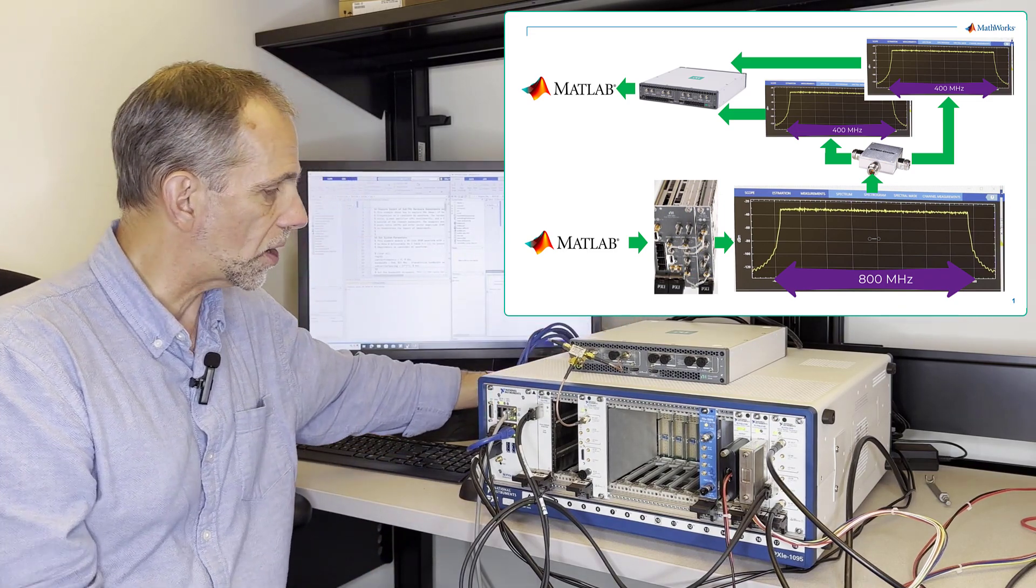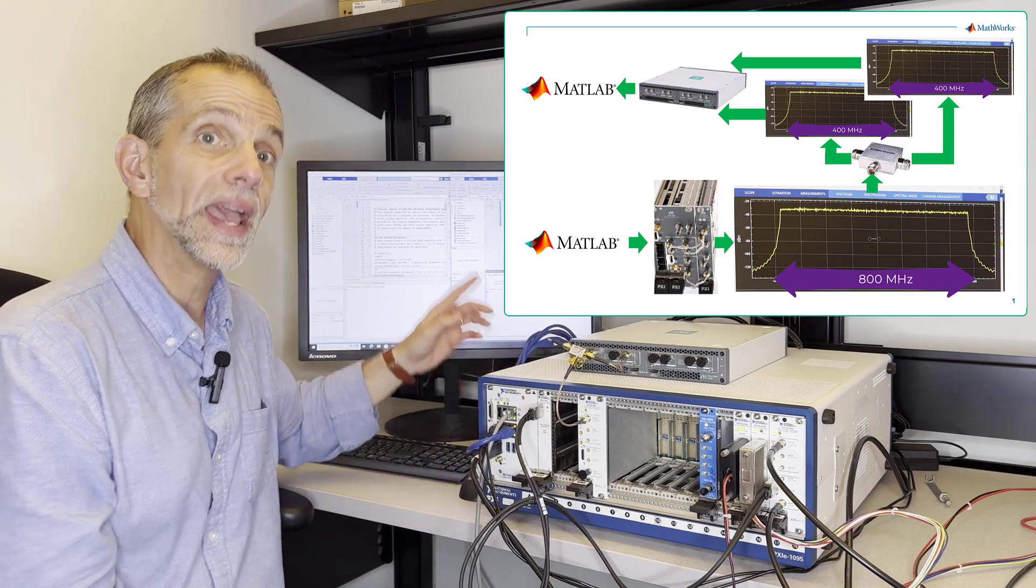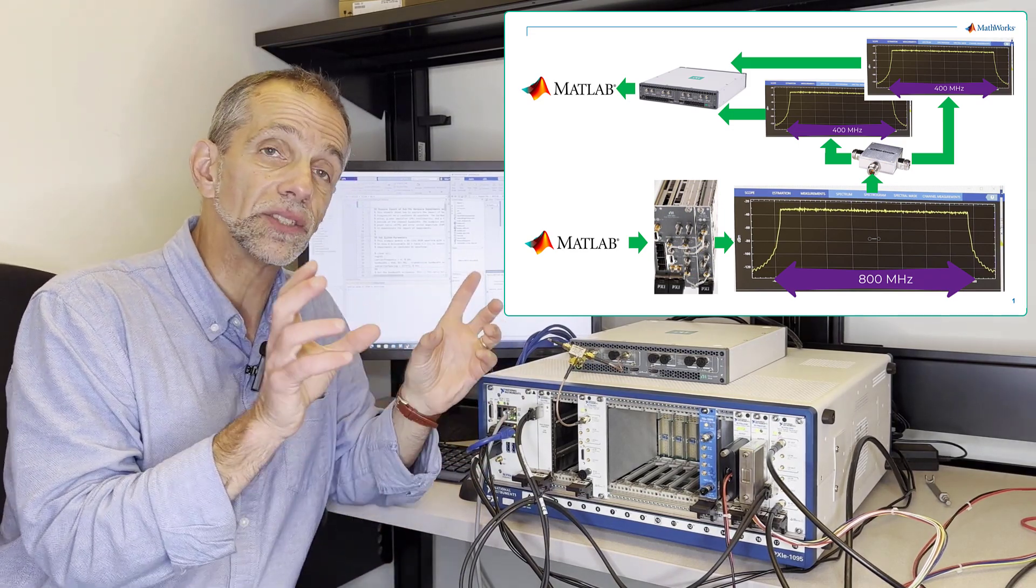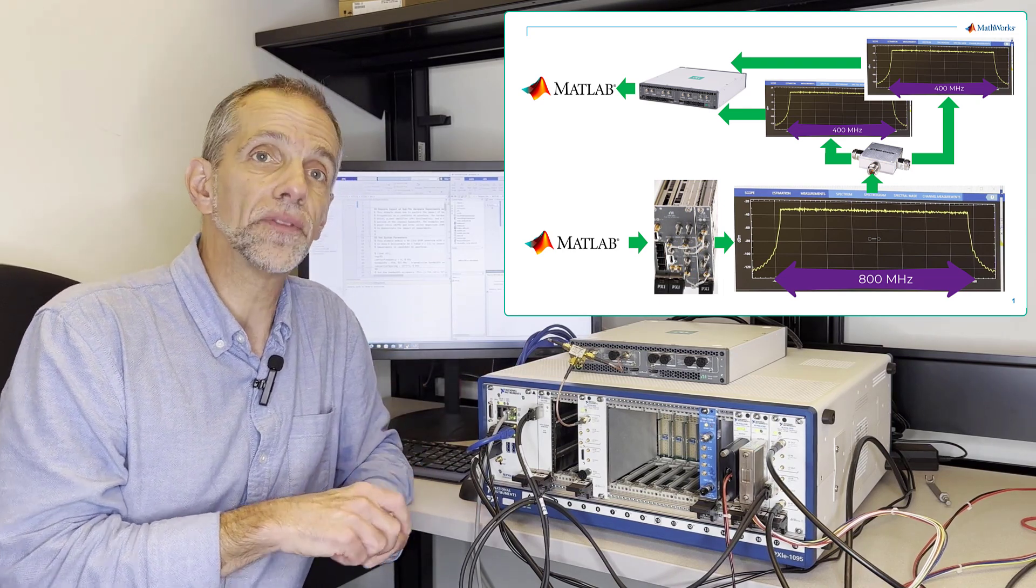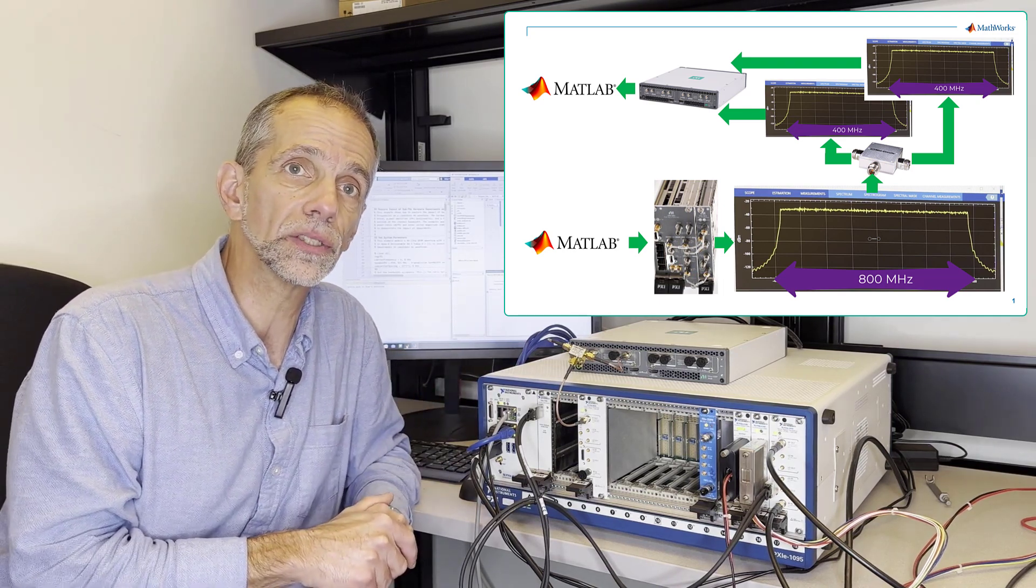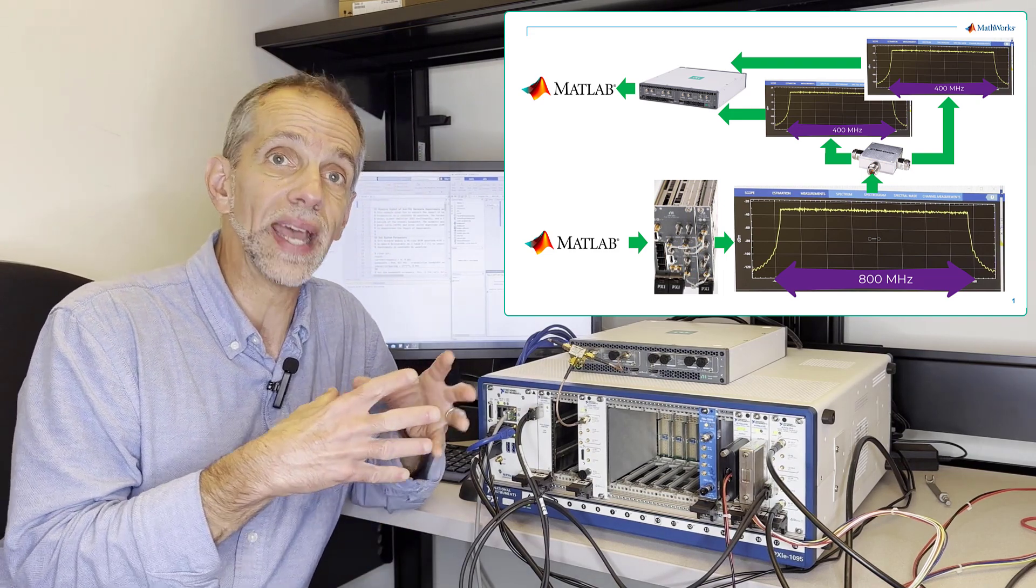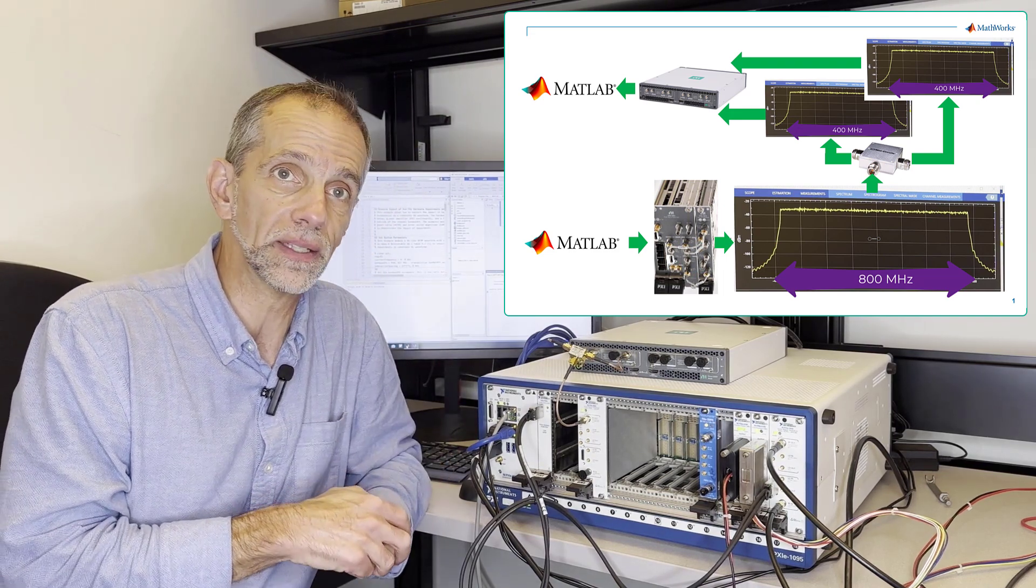Then we come back out of the radio back into the embedded controller and MATLAB, where those two 400 megahertz signals get stitched back together to make the composite 800 megahertz 6G exploration signal, at which point we will do some error vector magnitude EVM analysis on that signal.